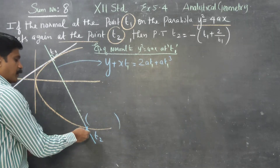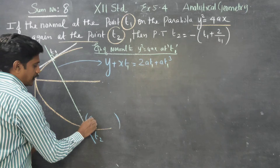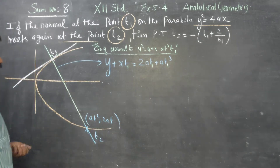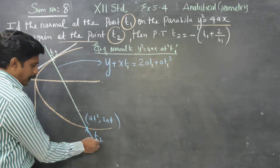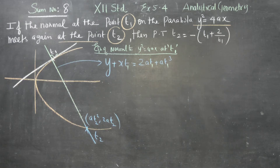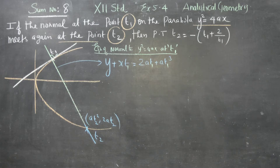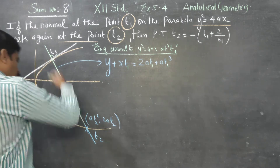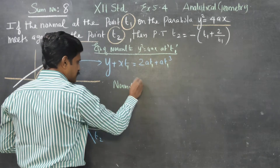The general parametric form of a point on the parabola Y² = 4ax is (aT², 2aT). So T2 corresponds to the point (aT2², 2aT2). The normal passes through this point T2 on the parabola.